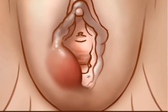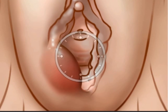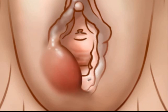The incision should be made along the inner surface of the cyst or abscess. It should be placed just outside and parallel to the hymenal ring at 5 or 7 o'clock on the vaginal opening. This position mimics the normal anatomy of the gland duct opening and avoids creation of a fistulous tract to the outer surface of the labia majora.